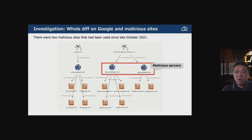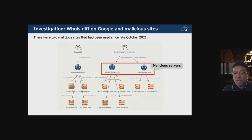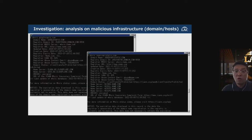Since late October 2020, googlev-api.com and jquery-api-static.com have been used by attackers using name servers managed by name.com — these are entirely separate from Google. We hope that name.com can block such domain requests in the future.